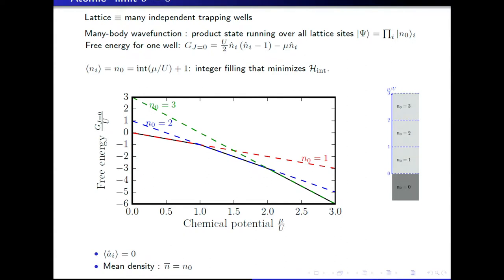This plot shows the free energy as you change the chemical potential. At zero chemical potential, the minimum is at N_0 equals zero. For N_0 equal to one particle per site, this holds as soon as mu becomes small and positive. When mu becomes equal to U, there is a crossing between the N_0 equal to one and two curves, and the filling abruptly changes from one to two, and similarly from two to three. In the phase diagram for this J equal to zero limit, when mu is negative there are no particles, then it jumps to N_0 equals one when mu crosses zero, to two when mu crosses one unit of U, and so on. In contrast to the coherent state case, the mean density is always an integer and jumps in steps.